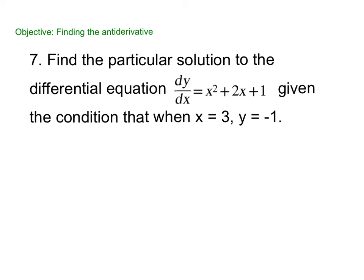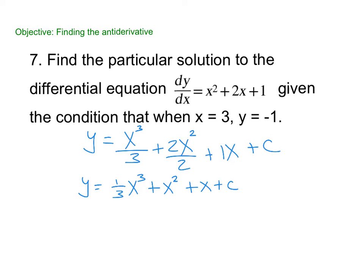All right, same idea, pause, try it on your own. So the derivative of dy/dx is y. The antiderivative of x squared, add 1, divide by the exponent. Add 1, there's a 1 there, 1 plus 1 is 2, divide by my exponent, and then 1x, plus C. I'm going to simplify that. 1/3 x cubed, plus x squared, plus x, plus C.